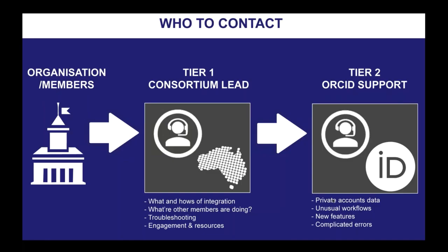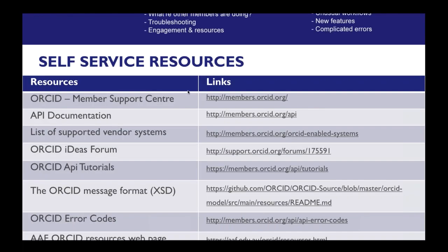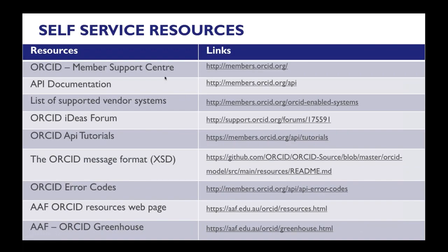If you have a really unusual workflow that nobody's ever done before, it's probably something ORCID might need to look at and work with you on. If you're using new features — for example, something like peer review that's in the latest version of the ORCID API but not yet a stable version — that's probably something you'd need to escalate. And if you get a really complicated error, we'd again escalate it over to ORCID support. There are a lot of self-service resources currently available.